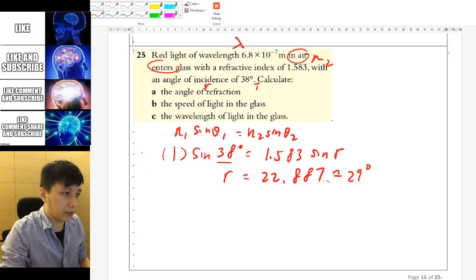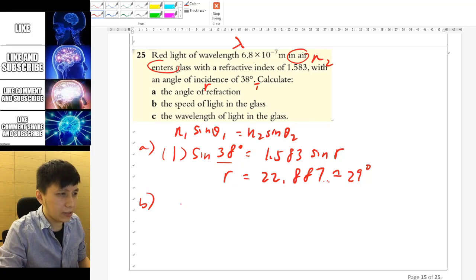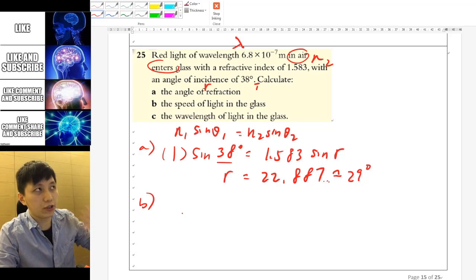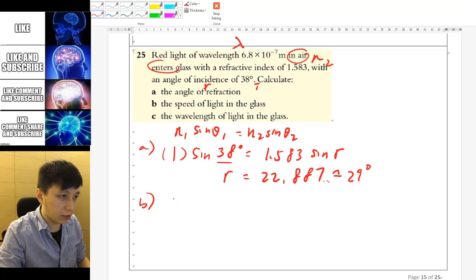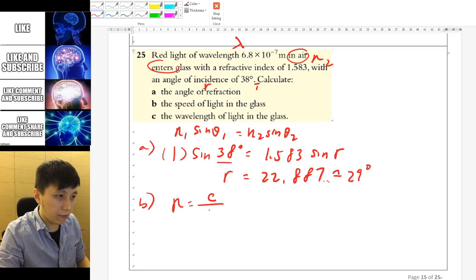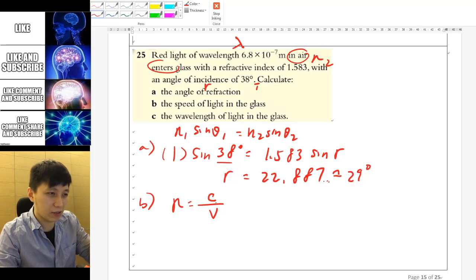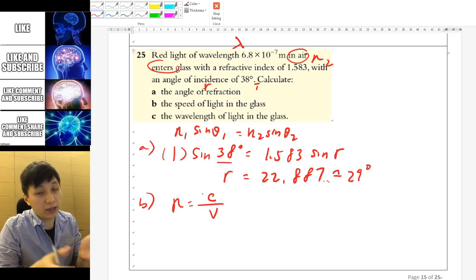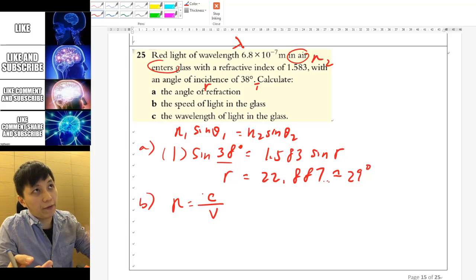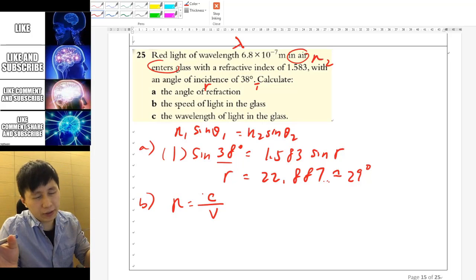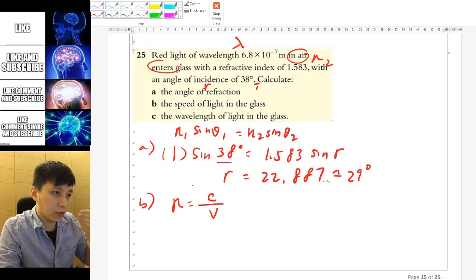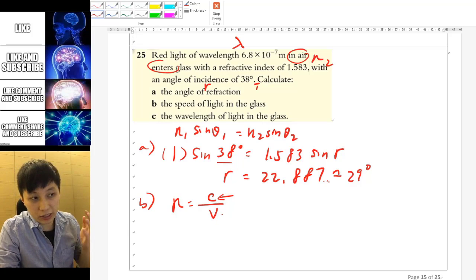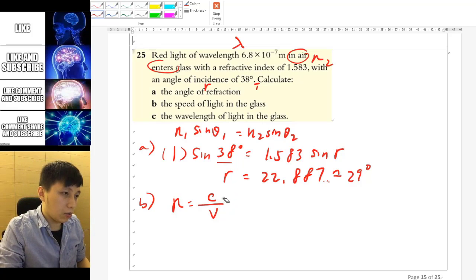For part B, the speed of light in glass. So one thing you should recall is the refractive index definition, which people usually just remember Snell's law, but not remembering the definition. So it's actually n equal to C over V. If you don't remember whether it's V over C or C over V, just think about this. In fact, the index is always larger than 1, because light travels the fastest in vacuum.